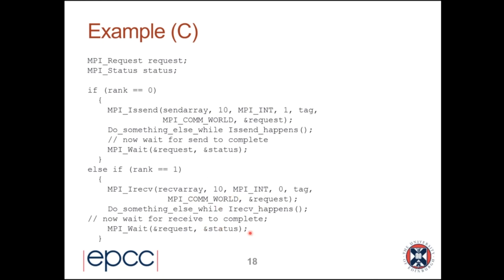The request here refers to the send; the request there refers to the receive. Some people think the request refers to the end-to-end communication, but there's no end-to-end in MPI. The wait on the sender tests that the send has completed; the wait on the receiver tests that the receive has completed. We appear to only have one request variable, but at runtime on two processes you actually have two requests - each process has its own. So this wait is referring to the send request, and that wait is referring to the receive request.